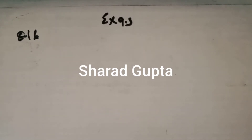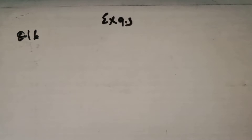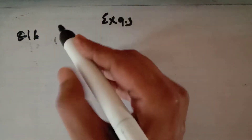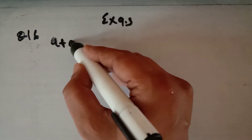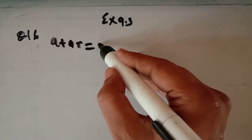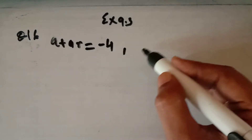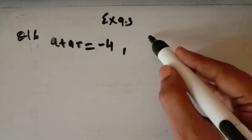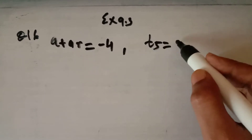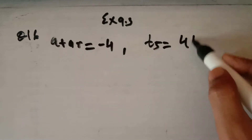This is lecture number 8 for the chapter on sequences and series for class 11th. In the last lecture we covered up to question number 15 of exercise 9.3. Now in question number 16, we have to find a GP whose sum of first two terms is given as minus 4, and the fifth term is four times the third term.